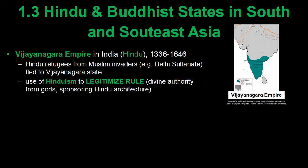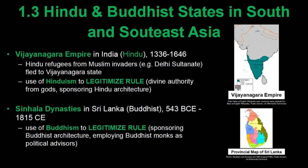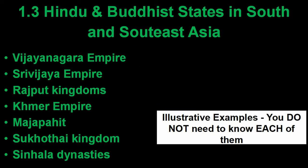The rulers sponsored the building of Hindu temples, which also helped to legitimize their rule. We see similar patterns of using religion to get legitimacy in all of these states. For example, the Sinhala dynasties of Sri Lanka were Buddhist — they sponsored the building of Buddhist temples and even employed Buddhist monks as political advisors. In all these other states, rulers are somehow affiliated with either Hinduism or Buddhism, and they use religion to increase or justify their authority.